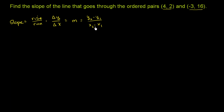This notation tends to be kind of complicated, but all it means is you take the y value of your endpoint and subtract from it the y value of your starting point — that gives you your change in y. And you take the x value of your endpoint and subtract the x value of your starting point to get change in x. So let's actually figure out the slope of the line that goes through these two points.